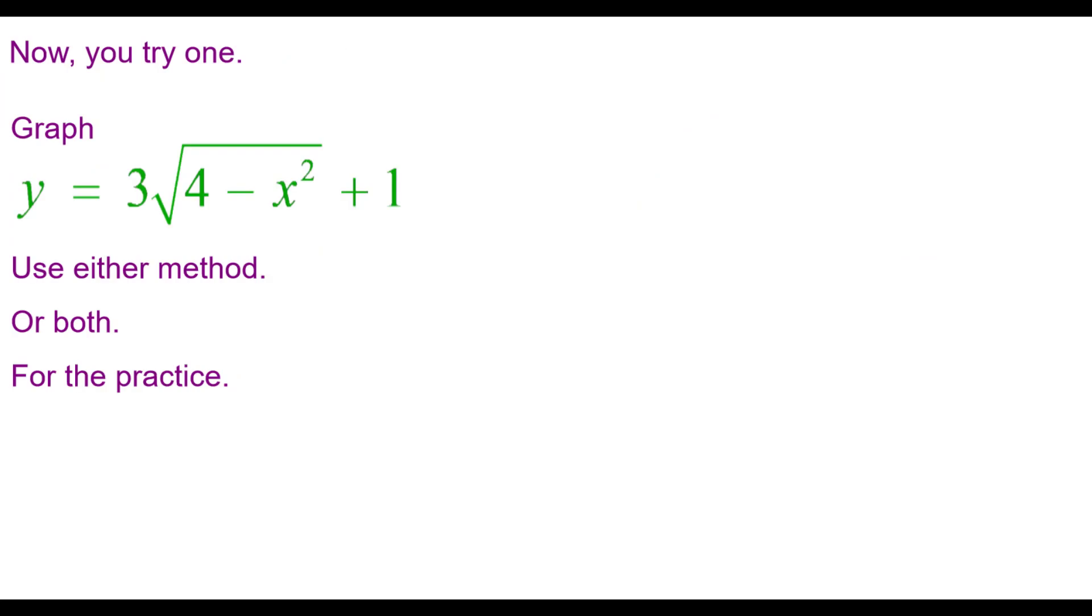Now you try one. Graph y equals 3 times the square root of the quantity 4 minus x squared plus 1. Use either method or both for the practice. Press pause to do this and then resume when you're finished to check your answer.